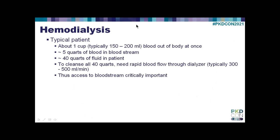With typical hemodialysis, we've got about 150 to 200 milliliters of blood out of the body at any one time. Most people have about five liters of blood in their bloodstream, and you've got 40-plus liters of fluid in your system. Waste products accumulate in all 40 liters, and if we've only got one cup of blood out of your body, we've got to run a lot of cups through the dialyzer. We typically run the blood at 300 to 500 milliliters a minute. Thus, access to your bloodstream becomes critically important.